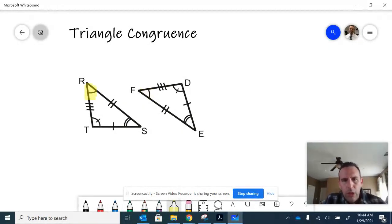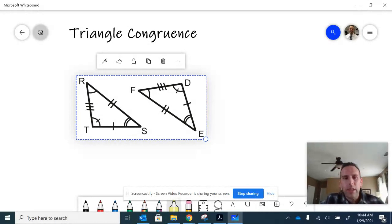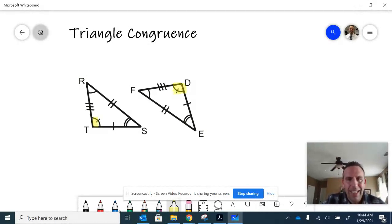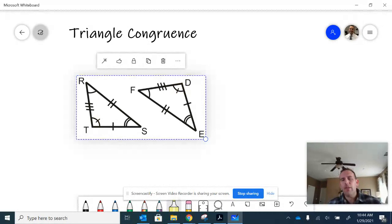If we were to look at the other angles, angle S and angle E have the same markings. And even though these triangles aren't oriented the same way, we have angles T and D with the same markings. And so that lets us know that all of the angles are congruent.